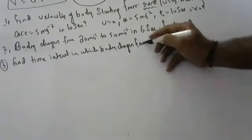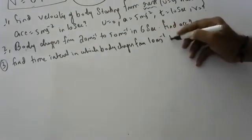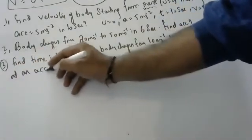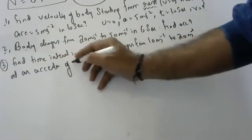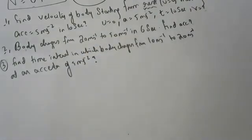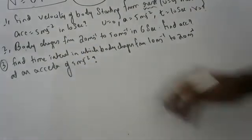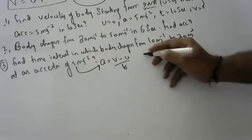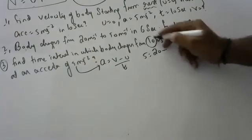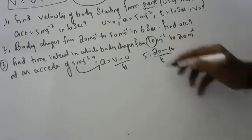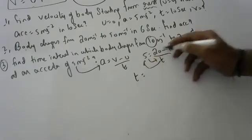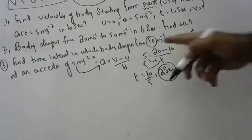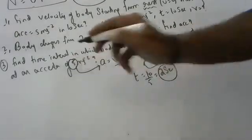Problem: a body changes from 10 meters per second to 20 meters per second with an acceleration of 5 meters per second squared. Find the time. Using V equals U plus AT: 20 equals 10 plus 5 times T. So T equals 20 minus 10 divided by 5, which gives T equals 2 seconds.